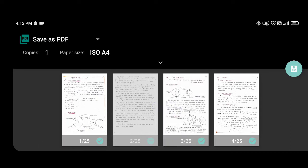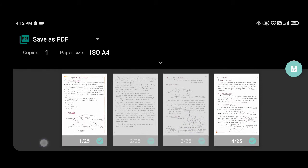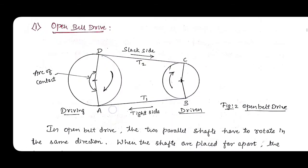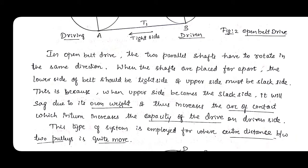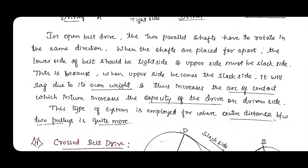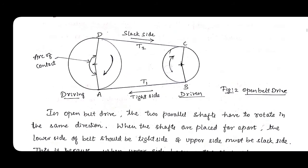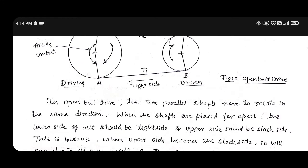When shafts are placed apart, the lower side of the belt should be the tight side and the upper side must be the slack side. When the upper side becomes the slack side, it sags under its own weight, which increases the arc of contact and increases the capacity of the driver on the driven side. This arrangement is employed when the center distance between the two pulleys is quite large, such as in flour mills.